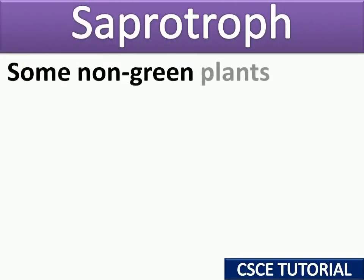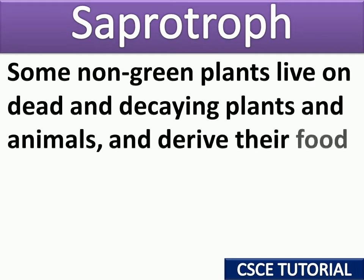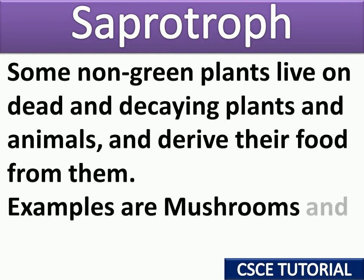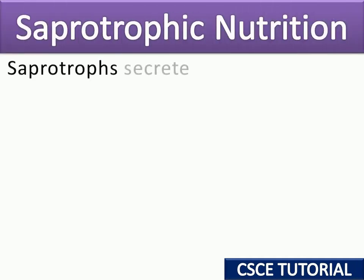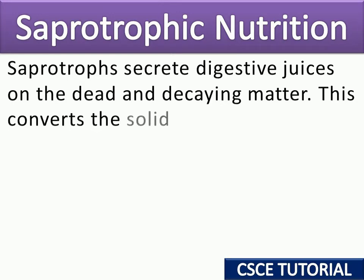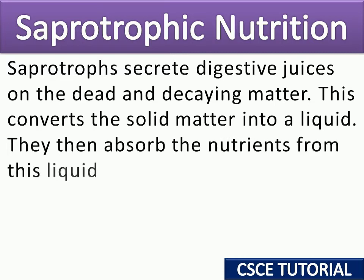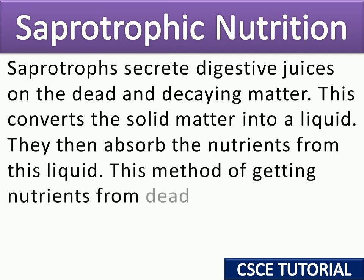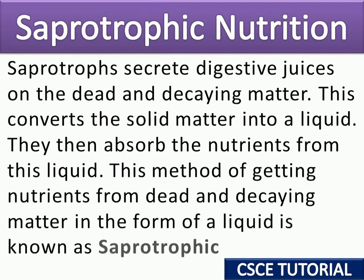Saprotrophic nutrition: some non-green plants live on dead and decaying plants and animals and derive their food from them. Examples are mushrooms, fungi, and bacteria. Saprotrophs secrete digestive juices onto dead and decaying matter, converting the solid matter into a liquid. They then absorb the nutrients from this liquid. This method of getting nutrients from dead and decaying matter in liquid form is known as saprotrophic nutrition.